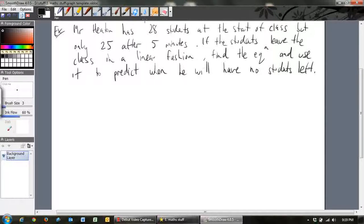Okay, so let's just have a look at this. What's the important information? I might just underline some important information in here. Firstly, he has 28 students at the start of the class. Then he has 25 students after 5 minutes, so that's the second piece of key information. And thirdly, they're leaving in a linear fashion. In other words, it's a constant linear fashion. We need to find the equation.